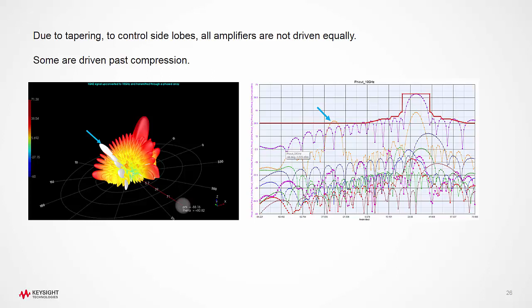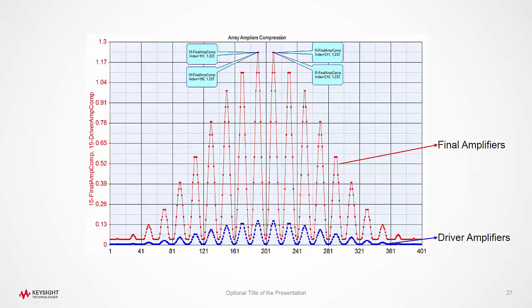That's because some of the amplifiers in the chain, in some of the chains, are being driven into compression or even saturation. So how do we identify these amplifiers? The tools make it easy to identify these.